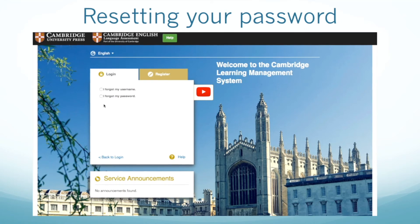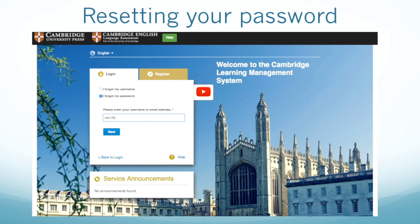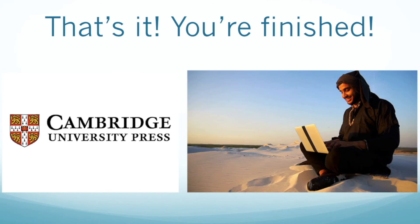Then click I forgot my password and enter your username. Then click Next, and check your Outlook email for an email from Cambridge. That's it — you're finished logging into the CLMS. Now you can study just about anywhere.